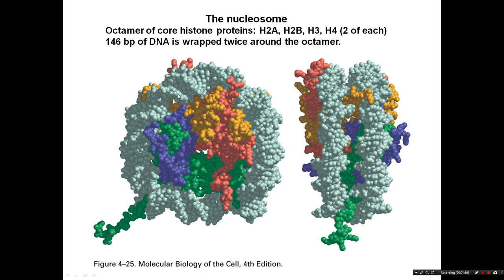Around the outside is 146 base pairs of DNA, which is wrapped twice around this octamer. This X-ray crystallography structure shows the nucleosome from two different viewpoints — front on and side on — and here you can see those two gyres of the DNA wrapped around that octamer of histone proteins.